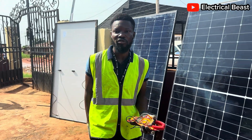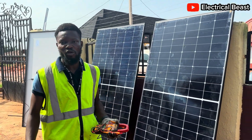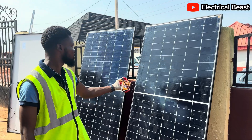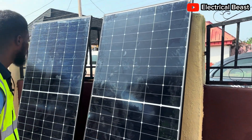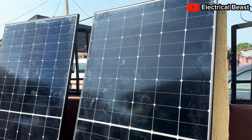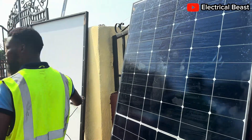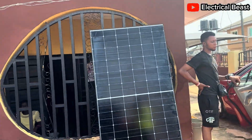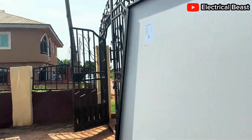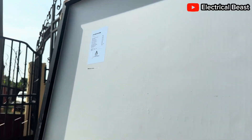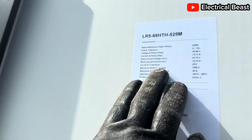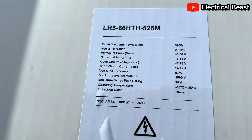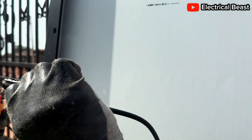Welcome back again to another installation of four solar panels of 525 watts each. These are the solar panels — one, two, three, four. The brand of these solar panels is Longi. You can see this LR5. Check the terminals — you can see it is boldly written.